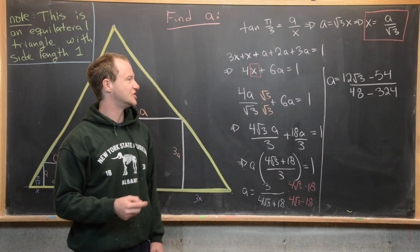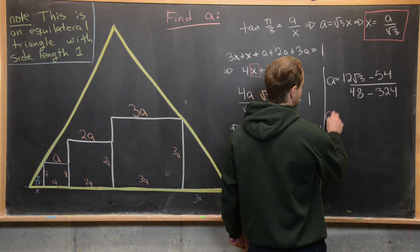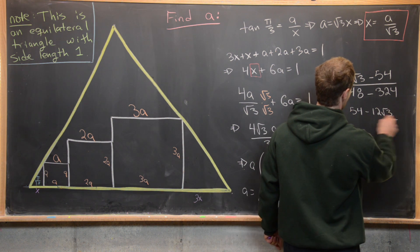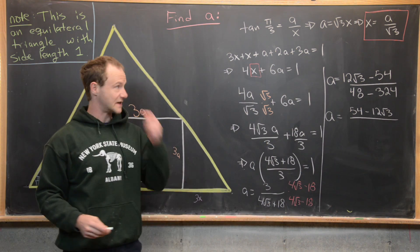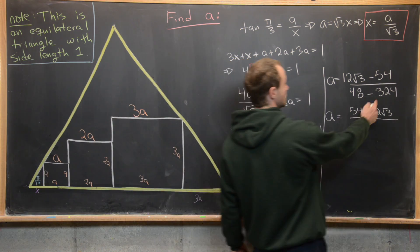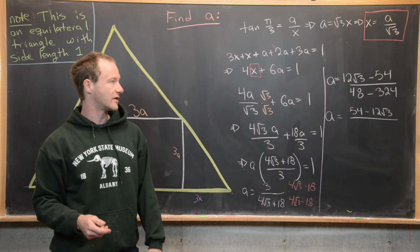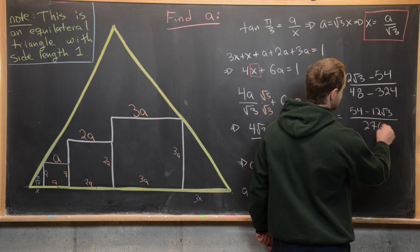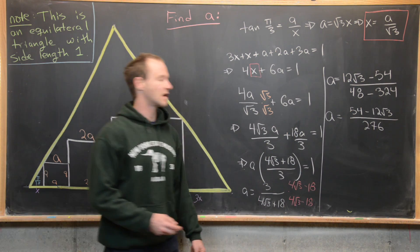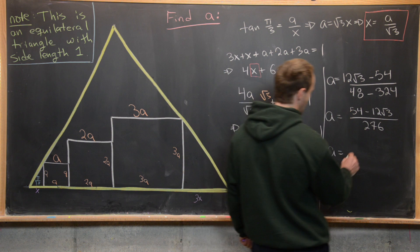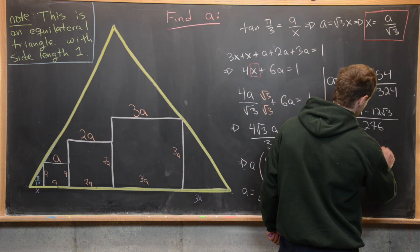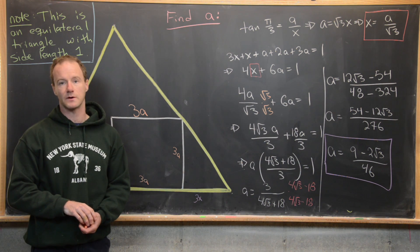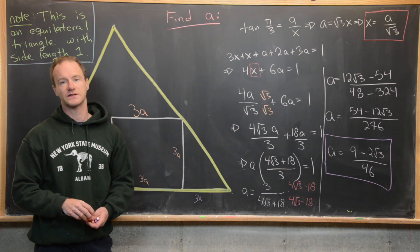So next maybe we'll simplify this by changing the order of the numerator and the denominator so I'm going to write this as a equals 54 minus 12 root 3 over, well what's 324 minus 48, so that is going to be 276. So now we can divide a 6 out of the numerator and the denominator and that's going to give us a equals 9 minus 2 root 3 over 46 and that is maybe the nicest description of this number and so that's our final answer and that's a good place to stop.